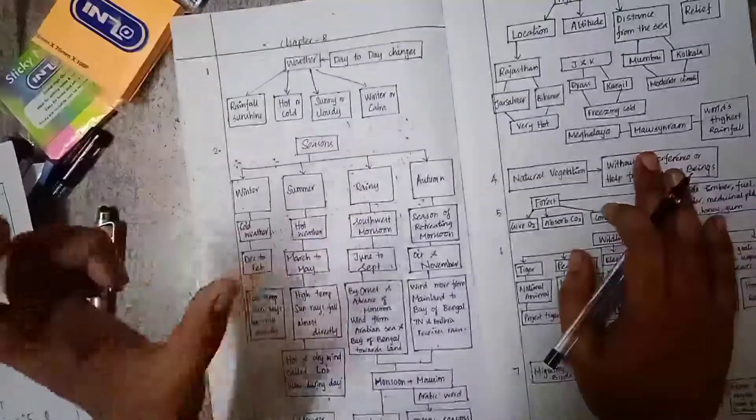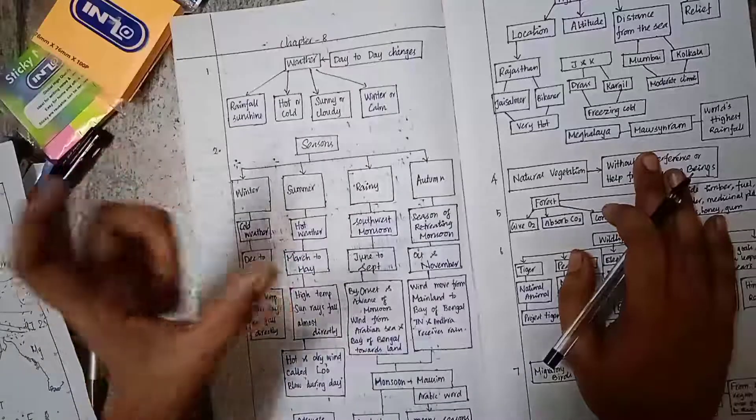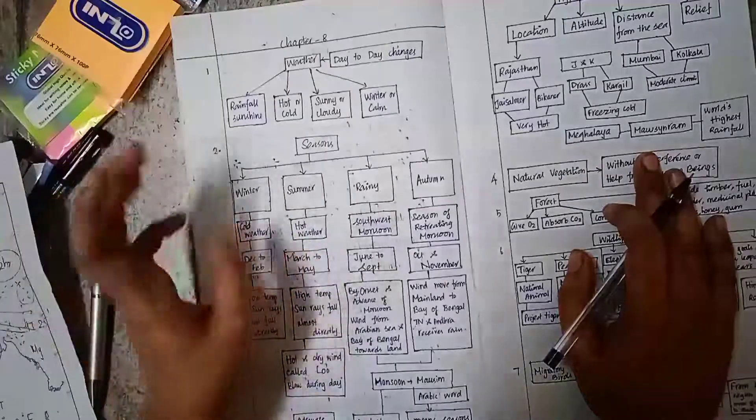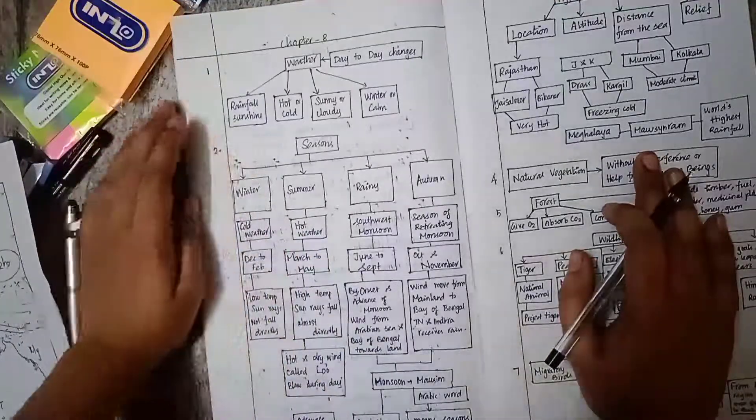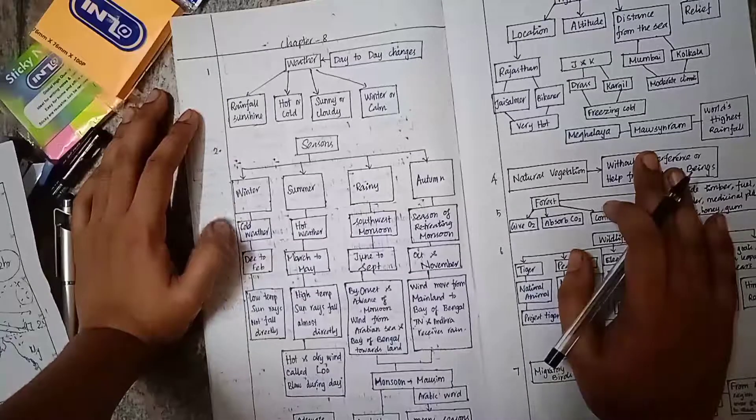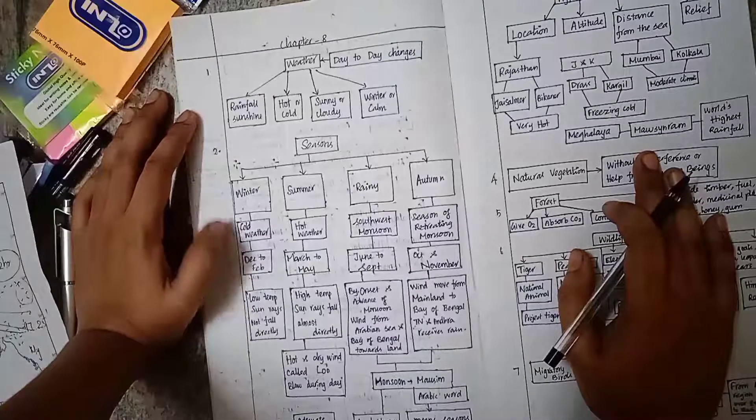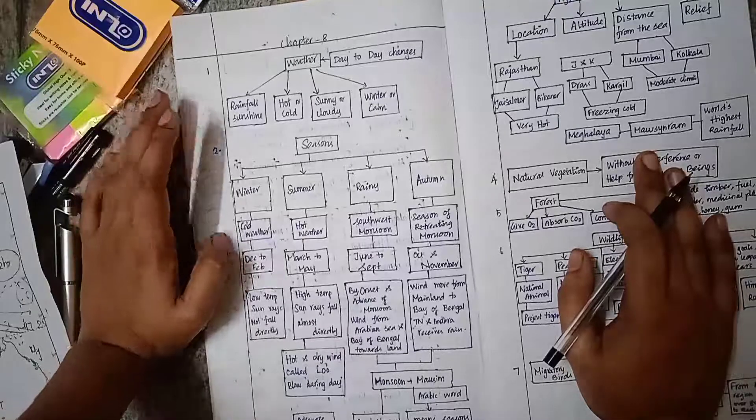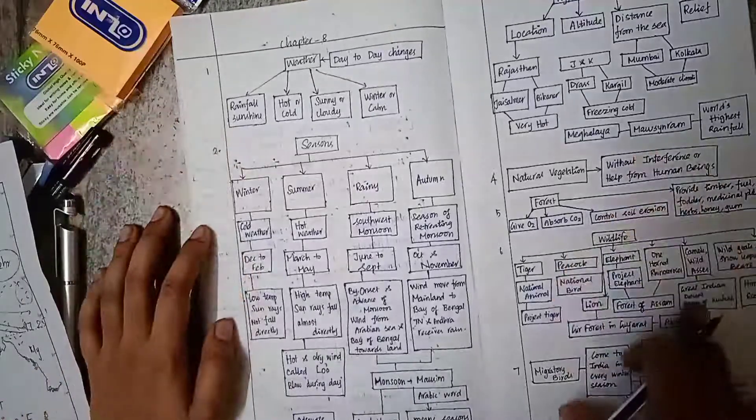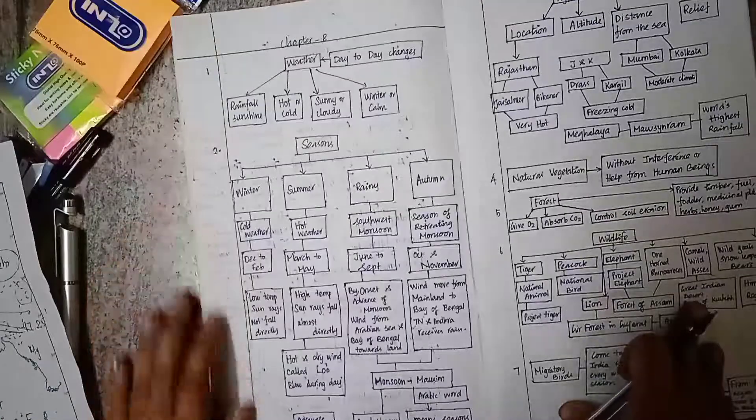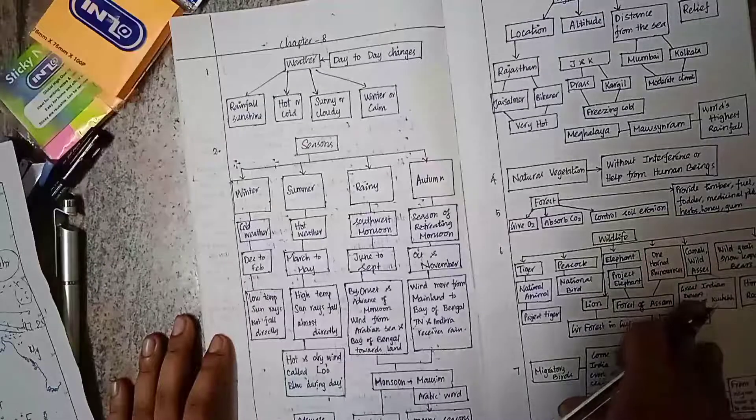Season is based on a certain period of time, based on duration. We have winter season, summer season, and rainy season. Winter season has cold weather, generally in India from December to February. During this period, we have low temperature and the sun rays don't fall directly.